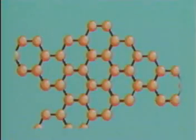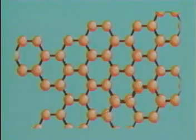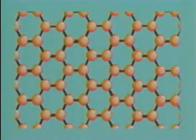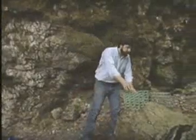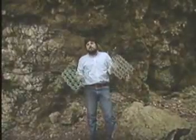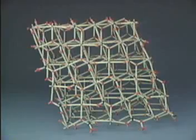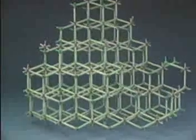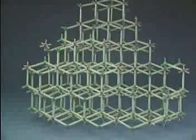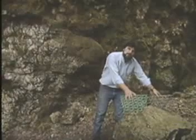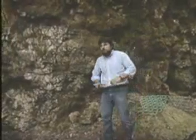Once a crystal forms, it will keep growing, adding more new atoms to its orderly pattern as long as conditions allow. As we can see from these models, each mineral has its own specific crystalline structure. This is a model of the mineral calcite, and this of fluorite. This unique arrangement gives each mineral its own specific physical properties. Some of them are easy to see.